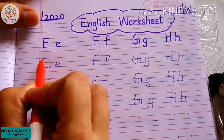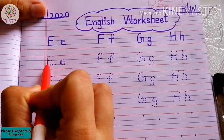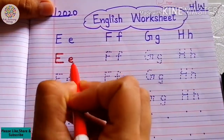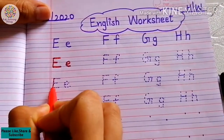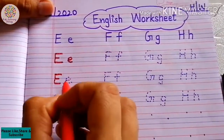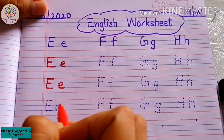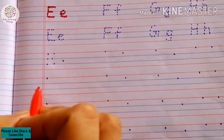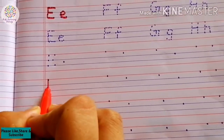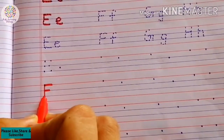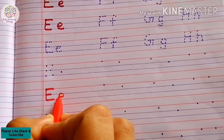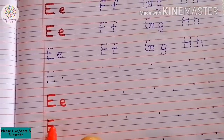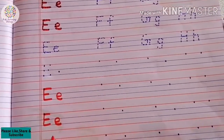Mama E is capital E and Baby E is small e. After this we will write on single dot. Mama E like this and Baby E like this.